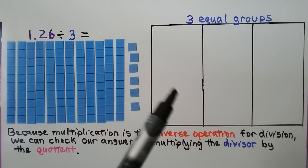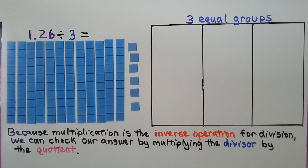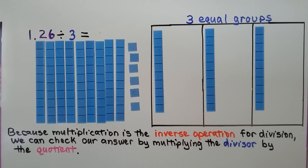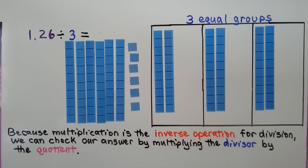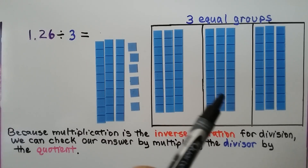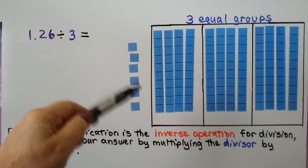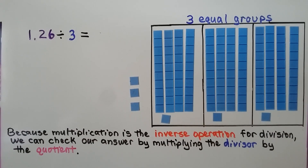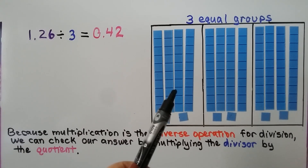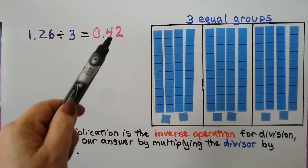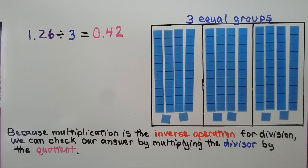We take turns putting one into each group until we've run out of units. By taking turns putting one in each group, we make sure the groups are equal. Now we can split the hundredths into the groups equally — we put one into each group and do it again. We count how many are in each group: we have four tenths and two hundredths. One and twenty-six hundredths divided by three is equal to forty-two hundredths.